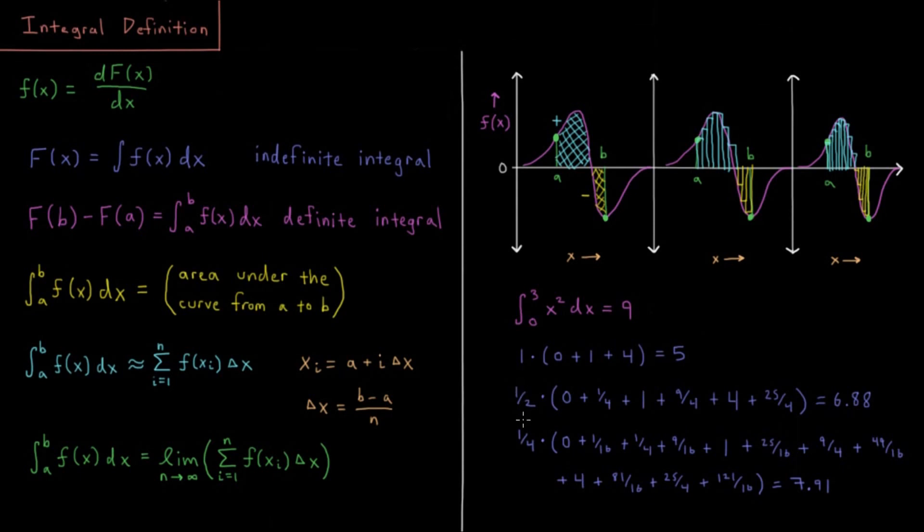But if we keep doing this process all the way until we get infinitely small rectangles, you'll see that we do converge to that final area under the curve value of the integral from zero to three of x squared being equal to nine.